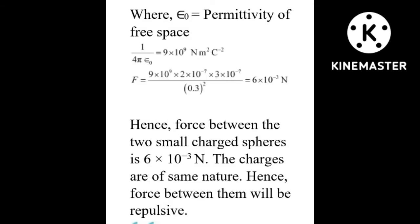Here ε₀ is the permittivity of free space and its value is 8.854×10⁻¹² coulomb² per newton·meter². Since π and ε₀ are constants, 1/4πε₀ = 1 / (4 × 3.14 × 8.854×10⁻¹²), which works out to 9×10⁹ N·m²/C². This constant value is substituted whenever we calculate force.